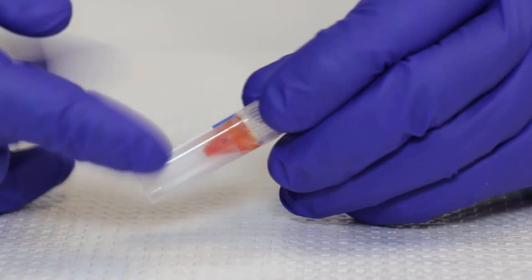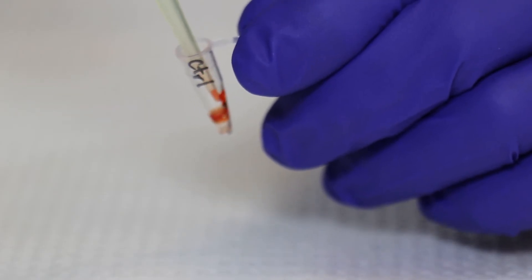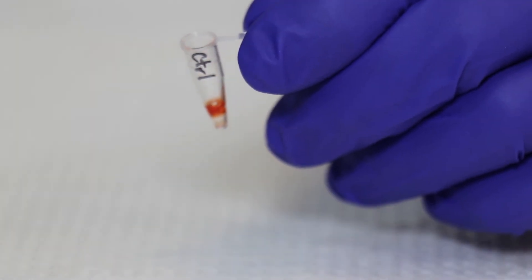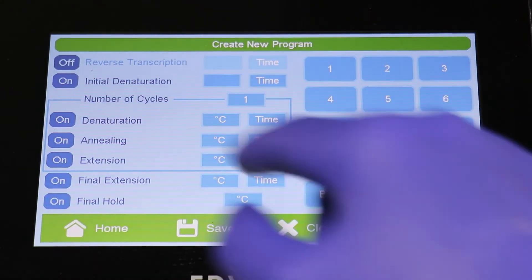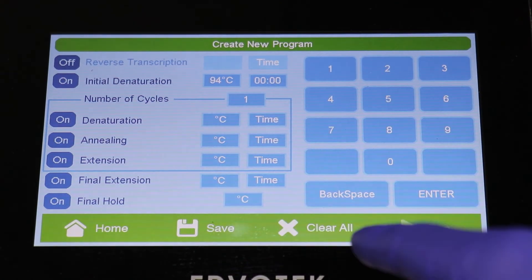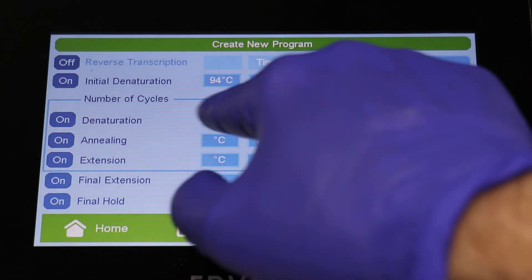The solution should be light red and clear of any solid pieces. Step 3: dispense 50 microliters of the diluted control mixture for each control reaction.